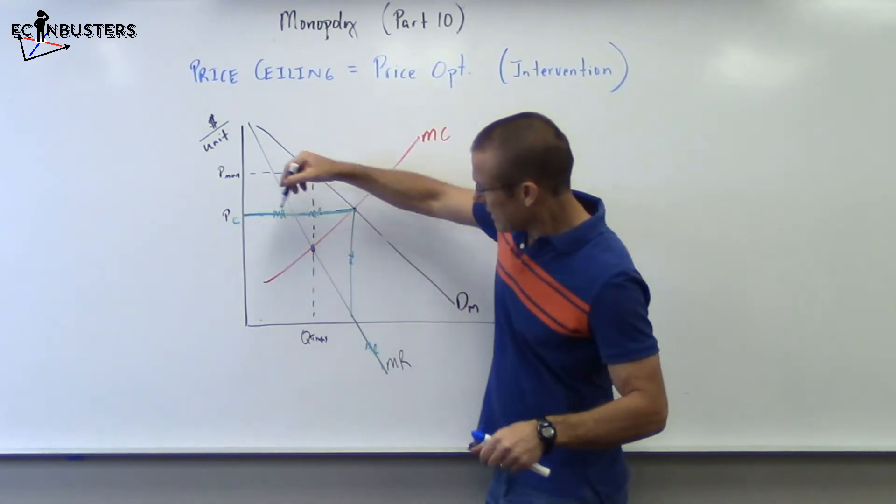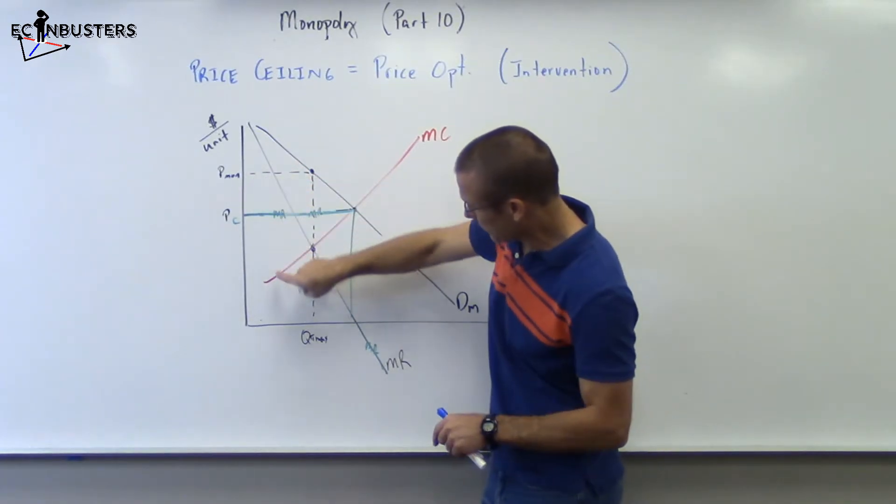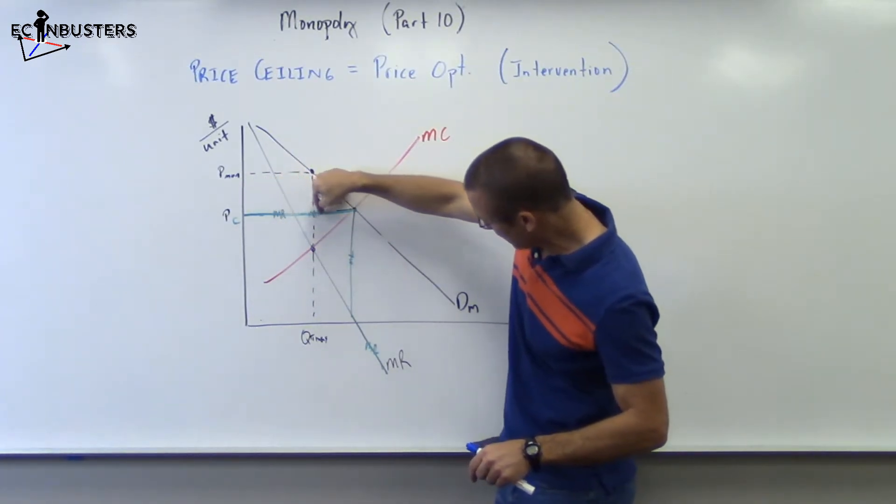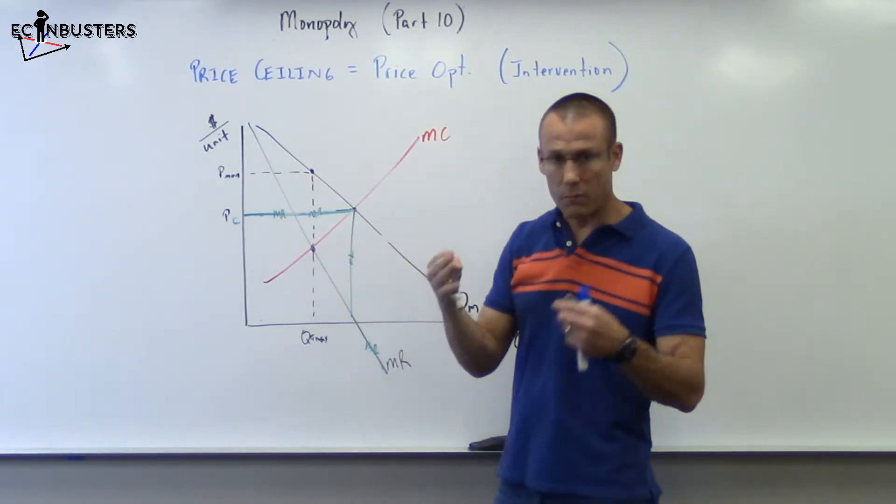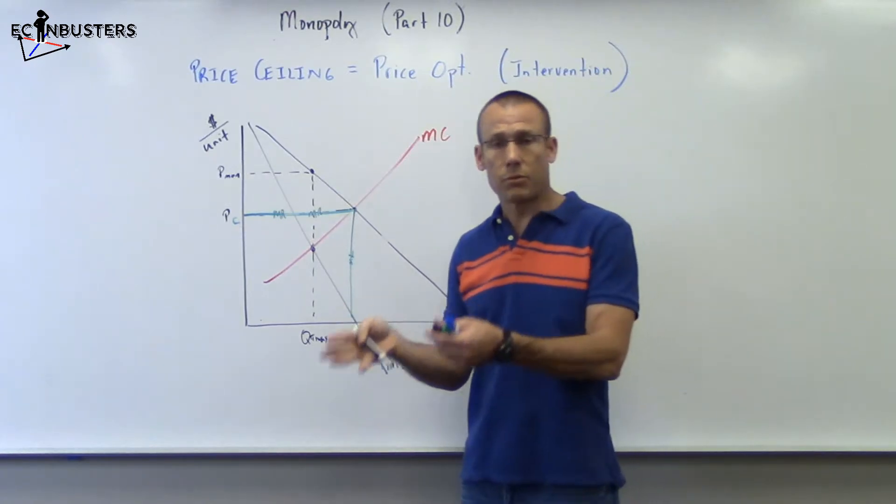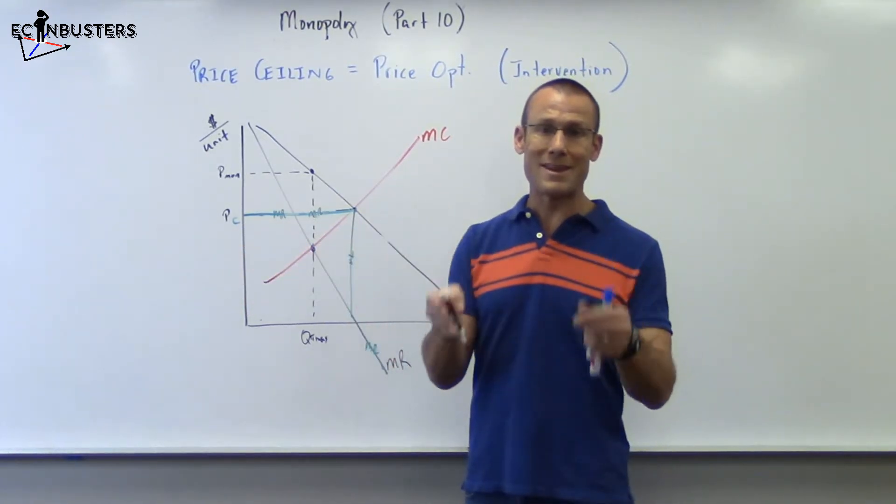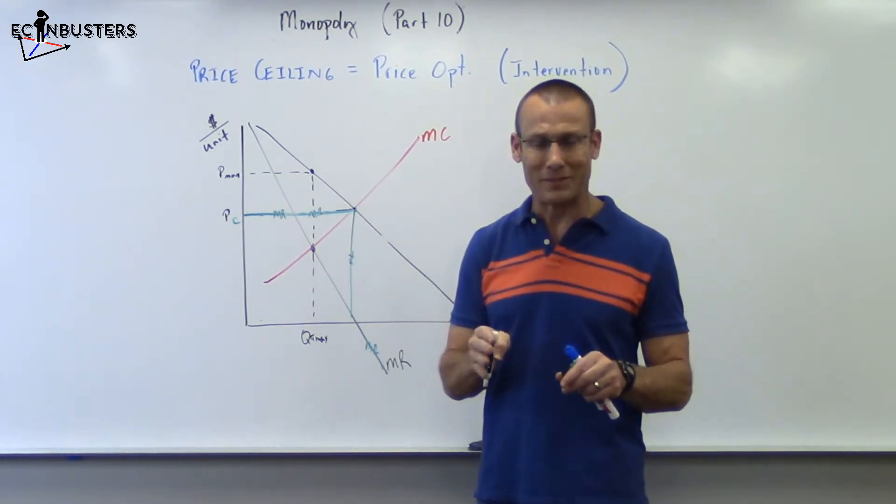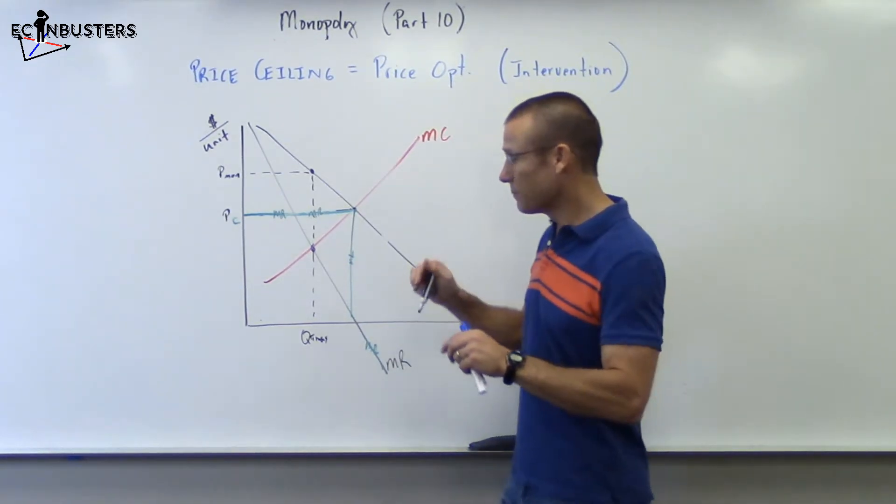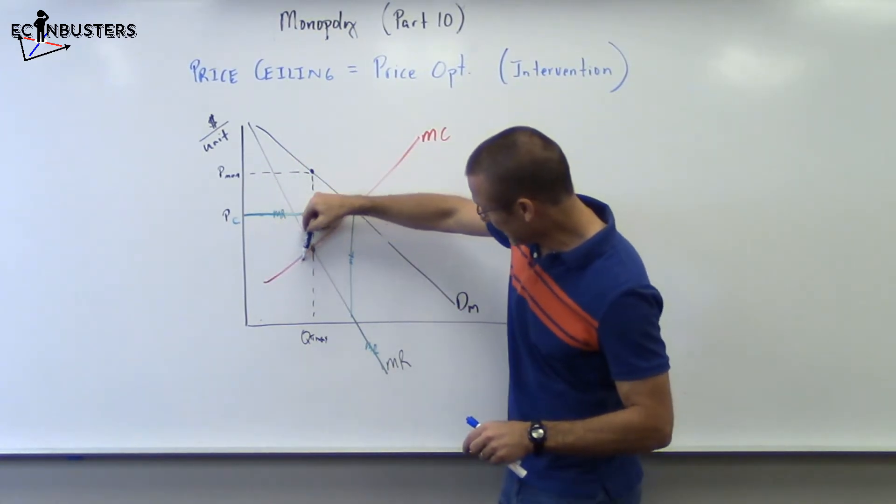If this is our new MR line all the way to the demand curve, we're going to keep producing because look at that MC right there. The MR is above MC for a higher level of output, which is just a crazy thing. Price ceilings we've always learned have reduced output levels, but not when we have a monopolist. I know, weird.